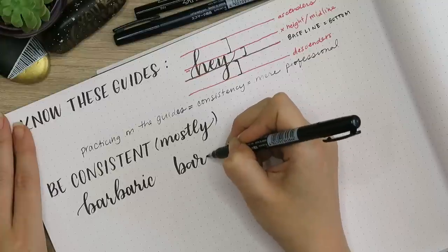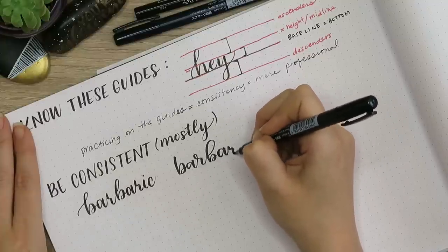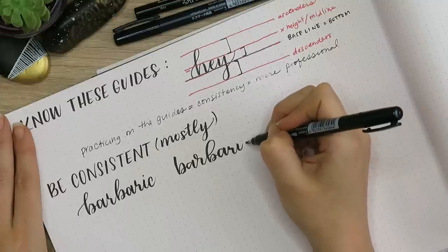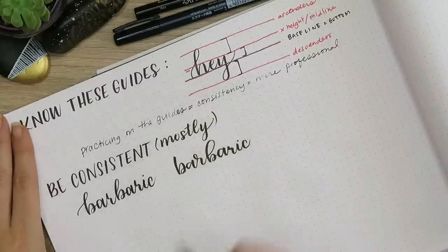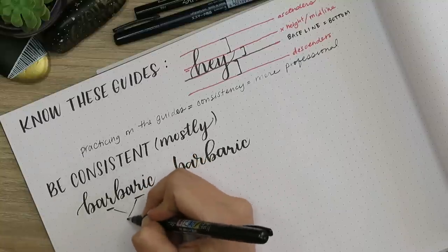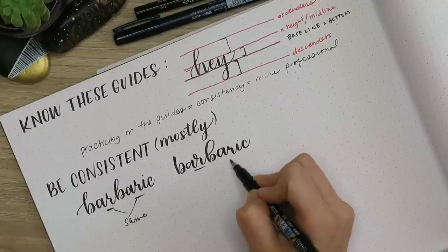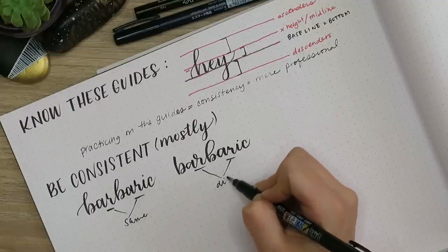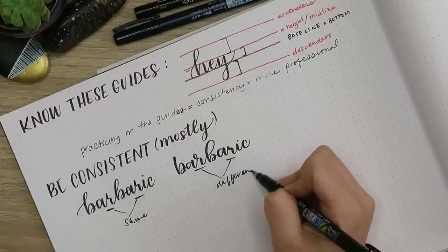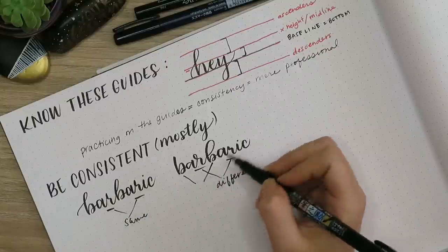For the purposes of beginner modern calligraphers, I say we just go with the four basics. The next tip is to be consistent. I'm writing out the word 'barbaric' here. When I say consistent, I mean with letters in the same word and letters in the same alphabet. As you can see on the left, I've got the B's, the A's, the R's—they're the same style.